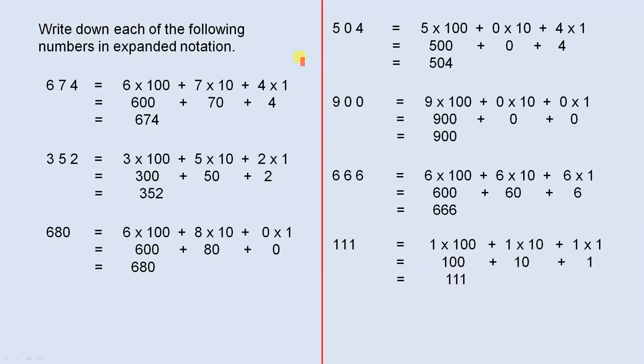Write down each of the following numbers in expanded notation. 674 is 6 times 100 plus 7 times 10 plus 4 times 1, which is 600 plus 70 plus 4, which is 674. So that's the units column.